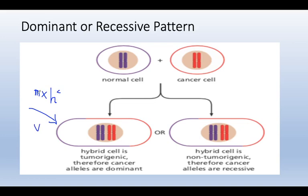If we fuse a mouse cell with a human cancer cell and there is no tumor formation after injecting those cells into the mouse, we say this is a recessive feature. This means the cancer cells have an accumulation of recessive genotype, and once fused with a normal cell, the cell regains its normalcy — the phenomenon of reversion occurs.